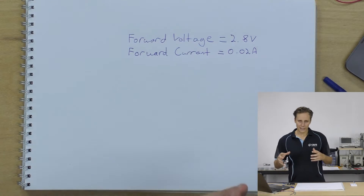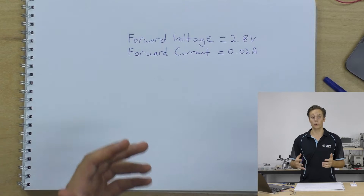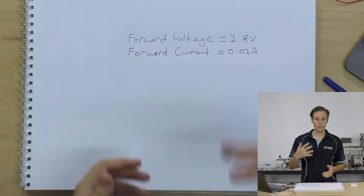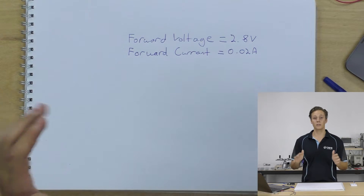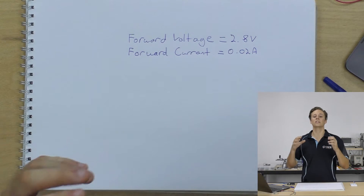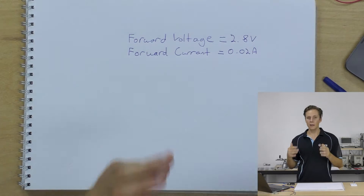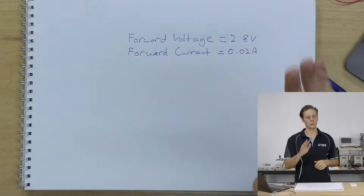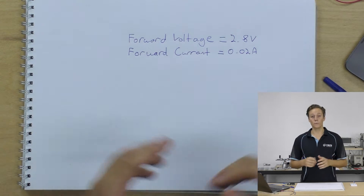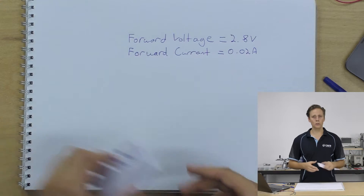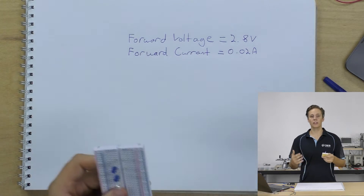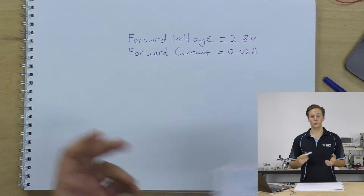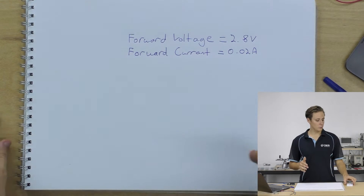LEDs aren't a smart device. Think of LEDs as a hungry dog — it likes dry food and will eat as much as it possibly can. It doesn't know when to stop. It will eat until it's full, get really thirsty, and its belly will get as tight as a drum. An LED is similar in that it doesn't know how much current is healthy for it — it'll just keep drawing as much current as available and destroy itself.